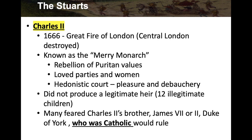Charles II is known as the Merry Monarch. His predecessor Oliver Cromwell was a strict Puritan who banned theater and gambling and wore black. Charles II was the complete opposite — a rebellion of Puritan values. He loved parties and women, and his court was known as a hedonistic court. Hedonism is the pursuit of pleasure, especially sexual pleasure and debauchery. He was the head of the Church of England yet living a completely immoral lifestyle. He never produced a legitimate heir, but did have 12 illegitimate children.